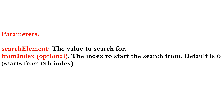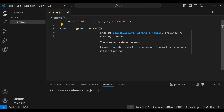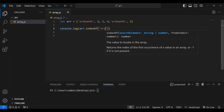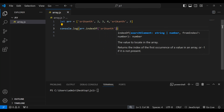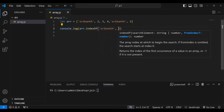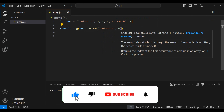This method takes two parameters. The first parameter is the value that you want to find or search. The second parameter is the starting index, which is optional — it specifies from which index inside the array you want to search the value. For example, searching for 'Srikanth' with a starting index of zero means: find 'Srikanth' starting from zeroth index, and give me the first occurrence.